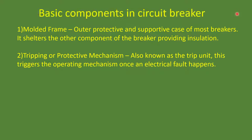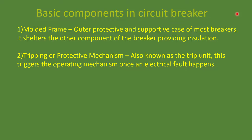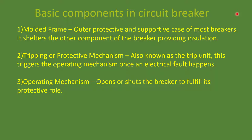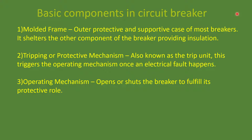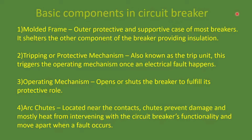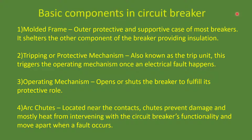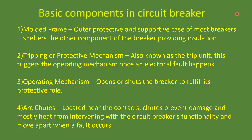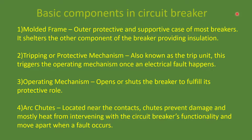The second component is the tripping or protective mechanism, also known as trip units. This is a sensing mechanism — it sends a signal to the operative mechanism for opening and closing of the circuit breaker. The third is the operative mechanism, used to open or close the circuit breaker. The fourth is the arc chute. When we suddenly disconnect the circuit breaker there will be an arc produced due to ionization of air. The arc chute is located inside the circuit breaker and is used to extinguish this arc.